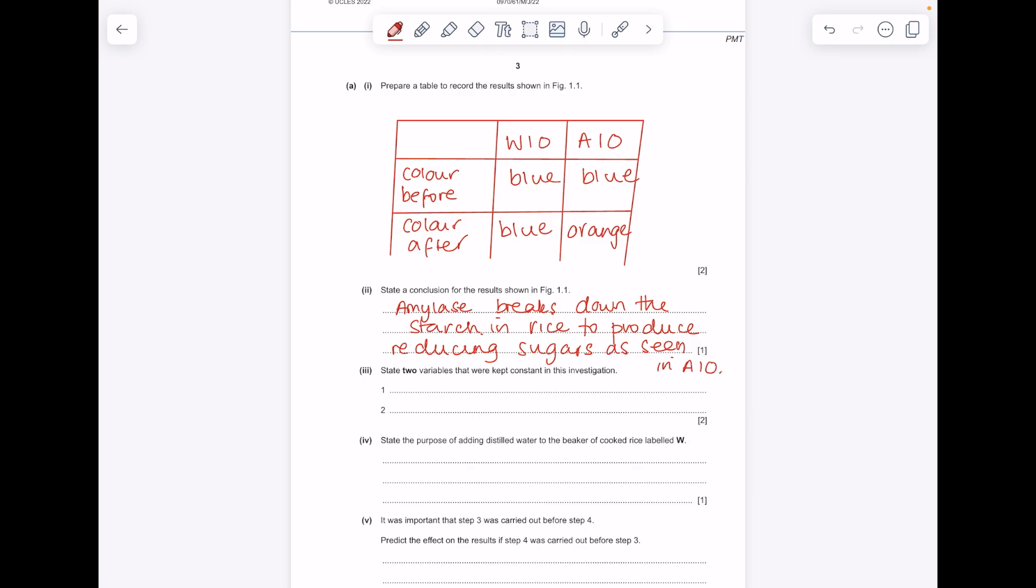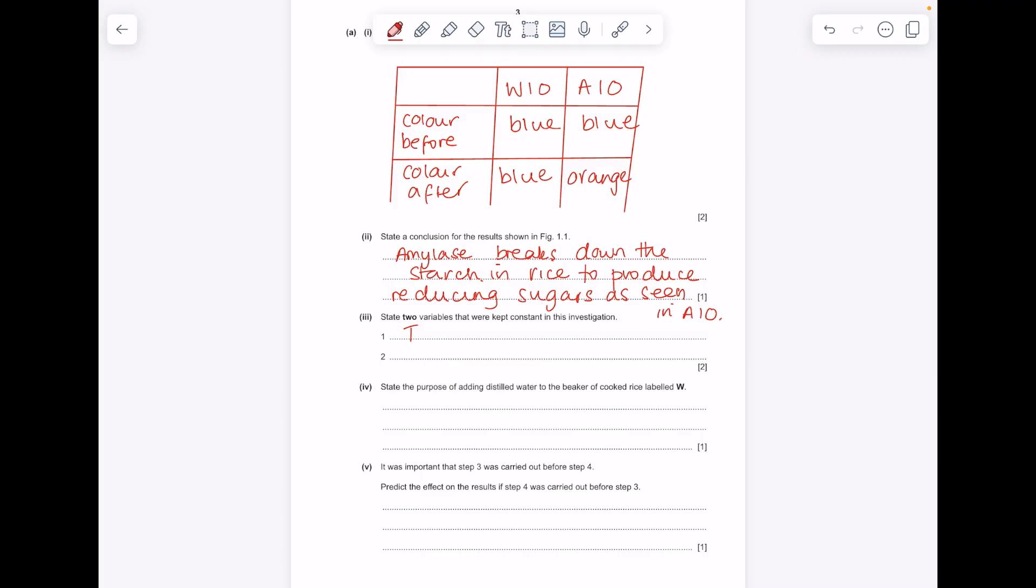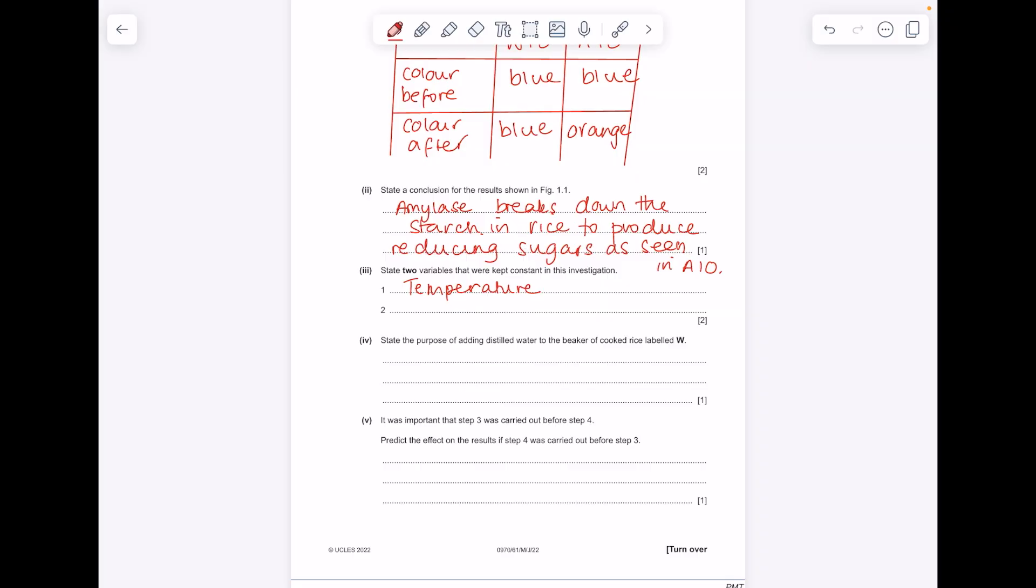State 2 variables that were kept constant. It already told us that they kept the temperature the same. What else do we need to keep the same? Well, anything relating to the rice, so the type of rice, the mass of rice. You could have also talked about the sample size, the volume of Benedict's solution used, the time spent in the water bath.